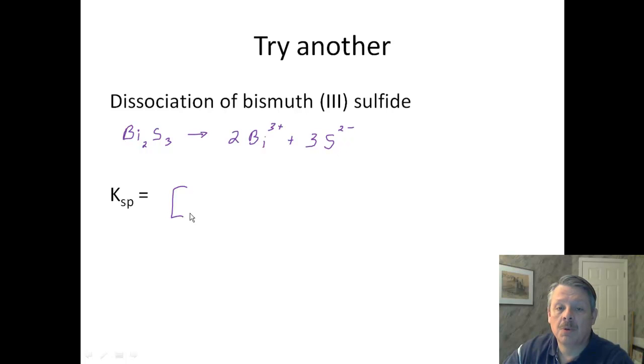So your solubility product constant is going to be bismuth, which is aqueous, which has a 3-plus charge. And this one over here is a solid, so we don't have to worry about it. And we have two bismuths, so we have to square that concentration. And our sulfide ion, which has a 2-minus charge, which is also aqueous. I've got three of them. So the concentration of bismuth squared times the concentration of the sulfide ion cubed. And that gives us our solubility product constant.